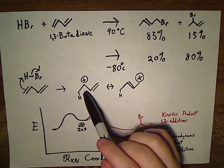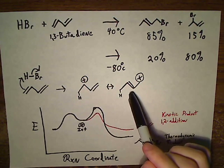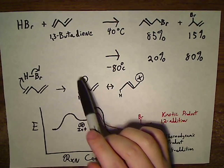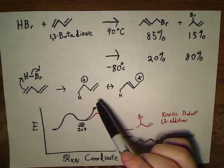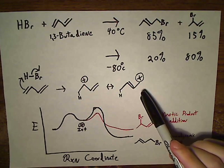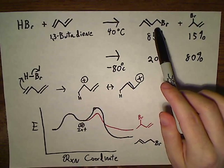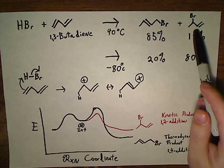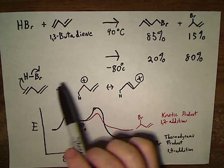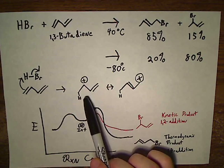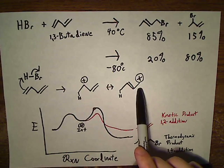And in this case, it's further stabilized by resonance because 1,3-butadiene is a conjugated diene. So you can see here that you're going to get either the 1,4 product or the 1,2 product depending on whether the free bromide ion attacks carbon-2 or carbon-4.